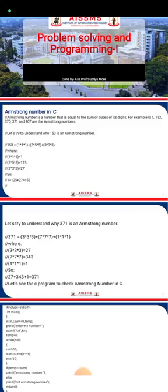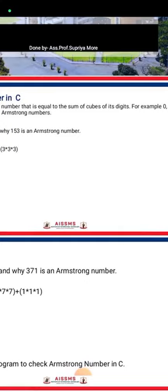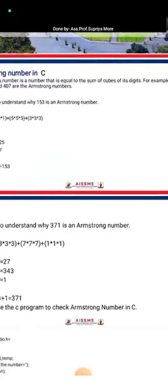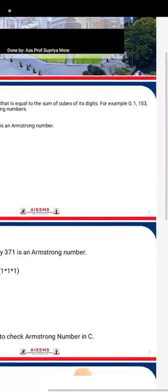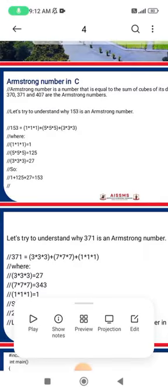An Armstrong number is a number that is equal to the sum of cubes of its digits. For example, 0, 1, 153, 370, 371, and 407 are Armstrong numbers. Let's try to understand why 153 is an Armstrong number.